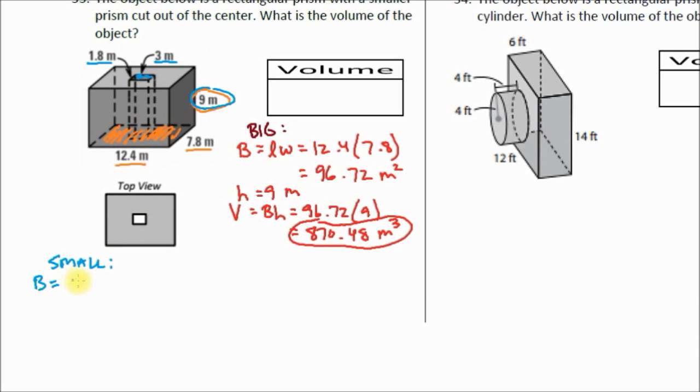So our base area for the smaller rectangular prism is length times width, which is 1.8 times 3, which is equal to 5.4 meters squared. Our height is the same as the larger prism, 9 meters. Our volume is base area times height, which is 5.4 times 9, and that is equal to 48.6 meters cubed.